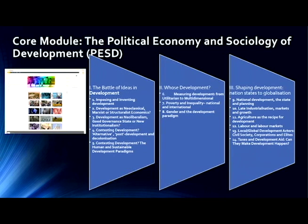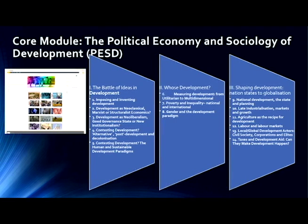Within the way that we think about development, we always ask the question of whose development, whose interests are being forwarded, and what power is involved in forwarding those interests. We look at the way that development can be measured from utilitarian to multi-dimensional perspectives. We look at poverty and inequality at international and national levels, and gender within the development paradigm. Then we use these theories to look at the way that development shapes nation states and globalisation — giving an overall perspective of processes of development that can be measured, analysed, and used to improve policy, whether that's NGO policy, governmental policy, or analytical and theoretical contributions.